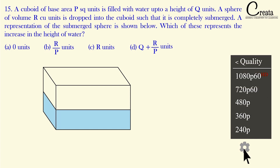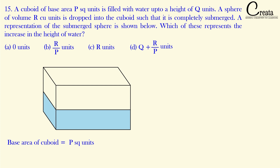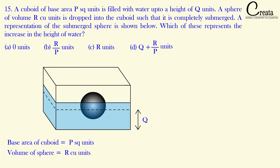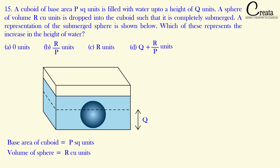Let's take down this question. A cuboid of base area p square units is given. It is filled with water up to a height of q units. Further, a sphere of volume r cubic units has been put into the cuboid, causing the water level to rise. We assume the rise in the level of the water is h units, and we have to calculate the value of h — that is, the increase in the height of the water.